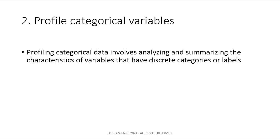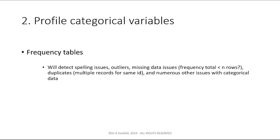For profiling categorical variables: categorical data is data that is not numeric. For categorical data, I would use frequency tables — they will detect all kinds of issues. Categorical data is usually reasonably simple to fix. In this course we'll look at Excel; I actually think Excel is more useful than programming for a lot of this stuff. You can fix a lot of categorical issues with find-and-replace. Frequency tables and pivot tables in Excel work well — we'll cover those in the next module.